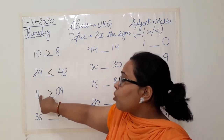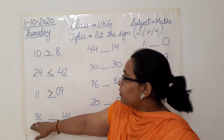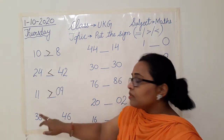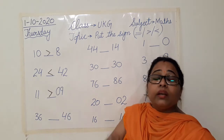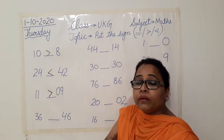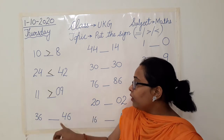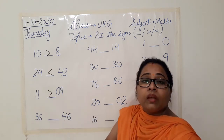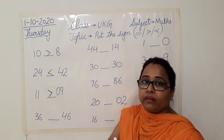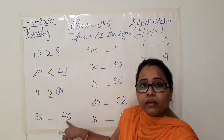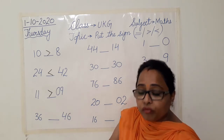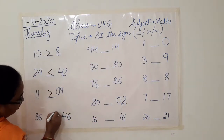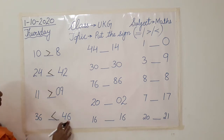Now we have thirty-six and forty-six. So six and six is the same at the ones digit. The difference is at the tens digit — we have three here and four here. So which is the greater number? Forty-six is greater than thirty-six. So we will put the sign opening the mouth towards forty-six.